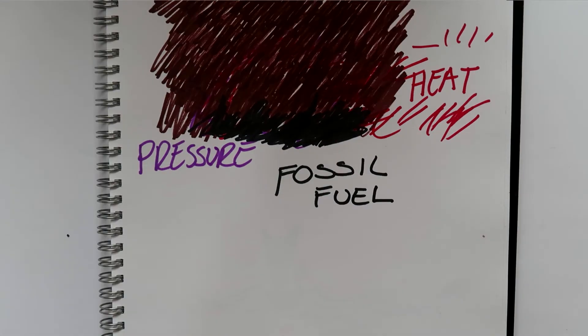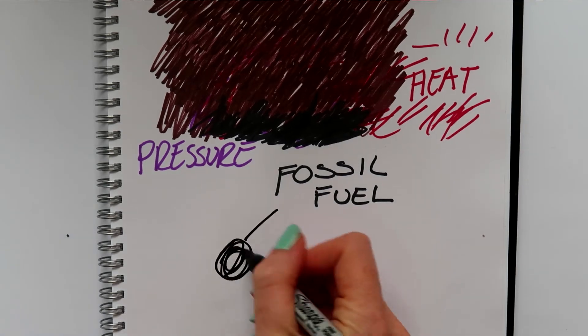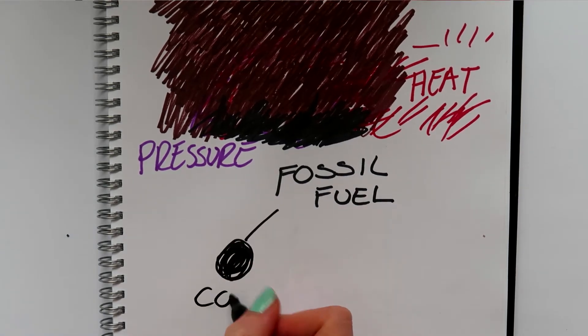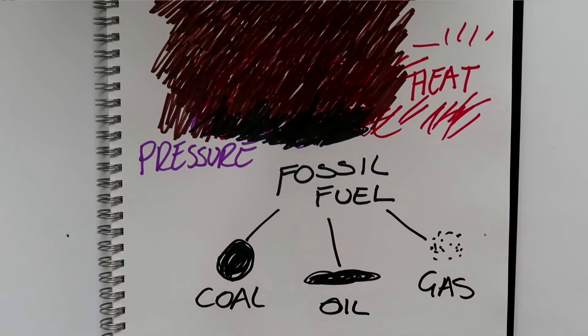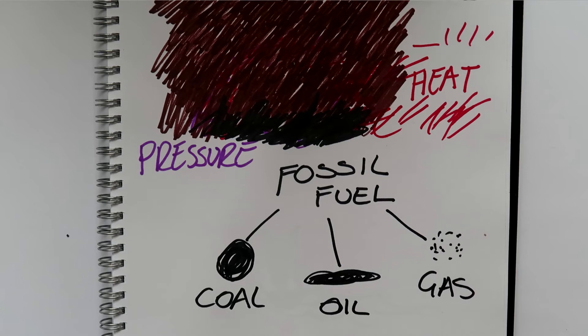Now depending on the location and the type of plants that were there, the mush turns into different types of fossil fuels — so that could be coal, oil, or gas. They are fuels because they contain all of the energy that was once stored within the ancient plants that had allowed them to grow. So fossil fuels are essentially ancient energy trapped deep within the earth's surface.